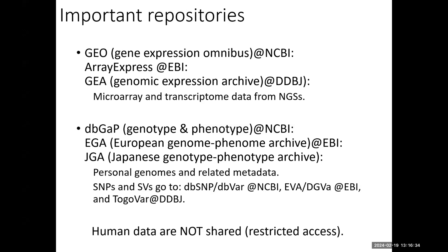At NCBI, dbSNP and dbVar take care of such nucleotide changes. In Europe, EVA functions for this purpose. In Japan, we have not yet established our own J-BAR repository, but in collaboration with DBCLS, another research institute within the same larger organization, we provide Togo BAR for human genome variations.